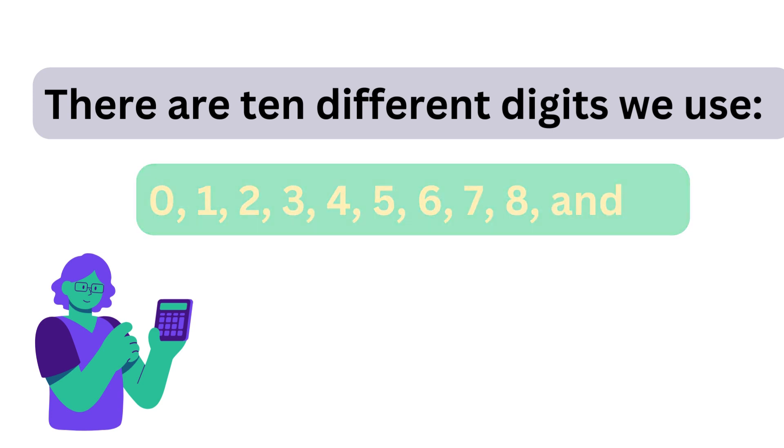There are 10 different digits we use: 0, 1, 2, 3, 4, 5, 6, 7, 8, and 9.